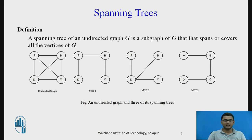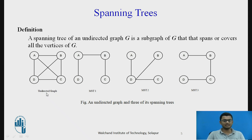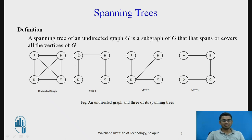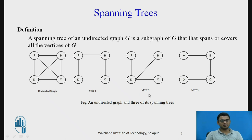A spanning tree of an undirected graph is a subgraph of graph G that spans or covers all the vertices of G. In the leftmost diagram we have an undirected graph with four nodes. A spanning tree connects all the vertices — all vertices are covered. In the three diagrams shown, each MST covers all nodes with three edges, as seen in the first, second, and third spanning trees.